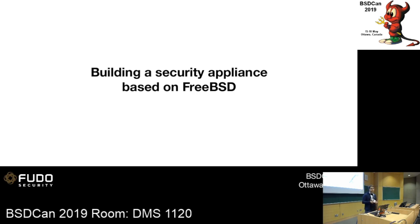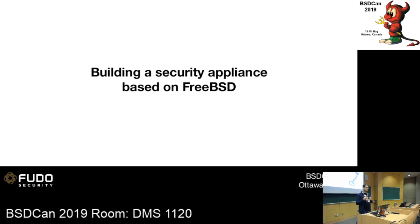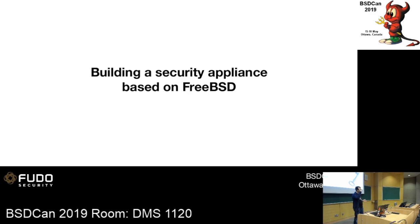We ended up evaluating GBDE. GBDE is the oldest method to encrypt data in FreeBSD — it's been with us since FreeBSD 5.0. It supports only one encryption method, ISCBC. For every write there is an additional random key which we also need to store, and this key is used to encrypt our data. This introduces two overheads: CPU overhead to generate the key, and disk overhead because for every write we need to store that key. GBDE is not developed anymore in FreeBSD.